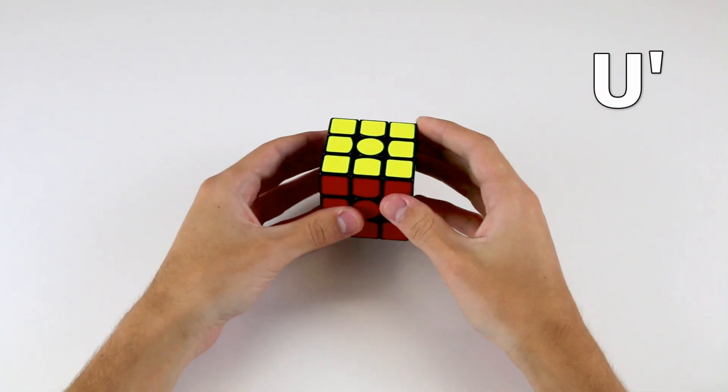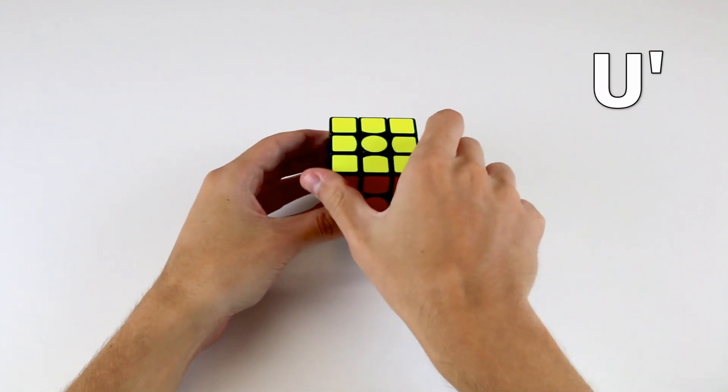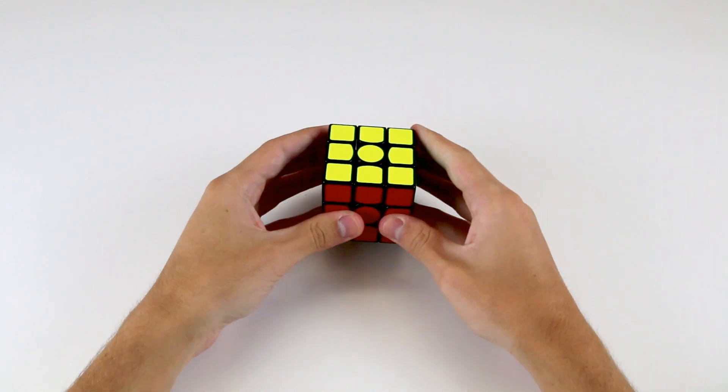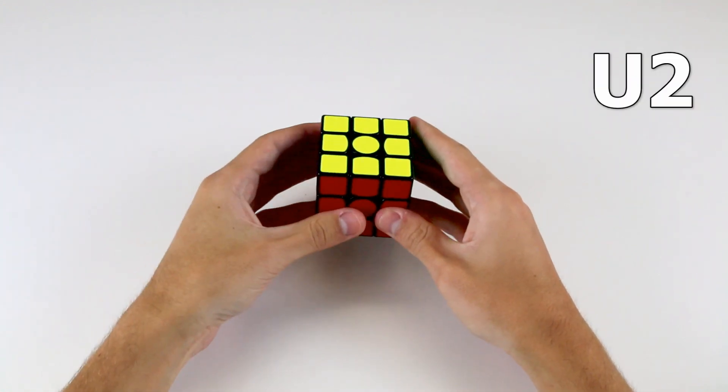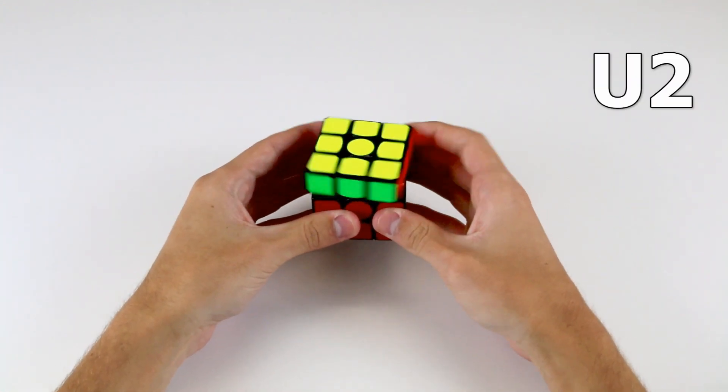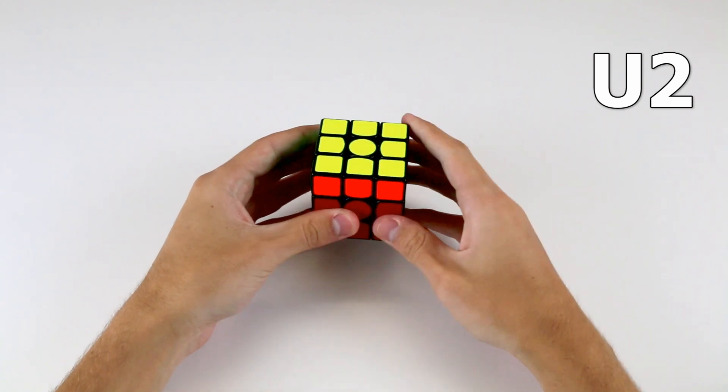If we get a U prime, that means turn the top layer 90 degrees anti-clockwise. If we get a U2, that means we have to turn the top layer 180 degrees. So U twice.